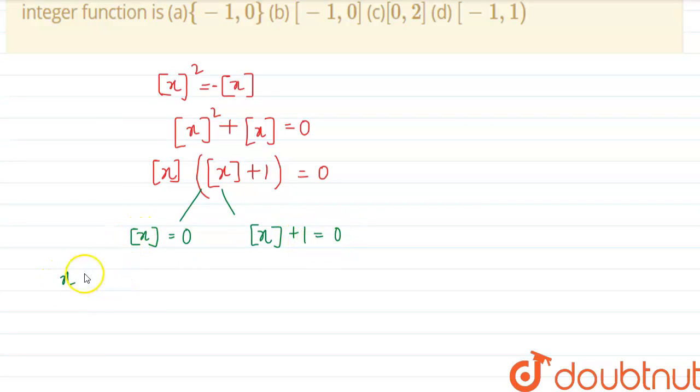This means x will be belonging to 0 to 1. See when 0 to 1 you can take any value like 0.3, 0.5. At each value the gif will give us greatest integer that is less than or equal to this number. So less than 0.3 the integer is 0, so that will be 0. This will also be 0 and so on.